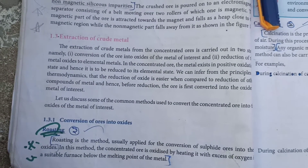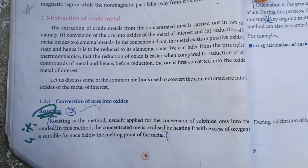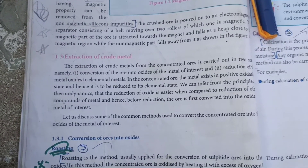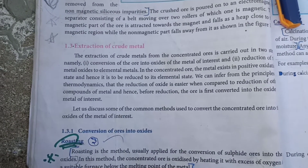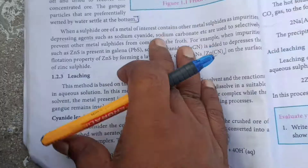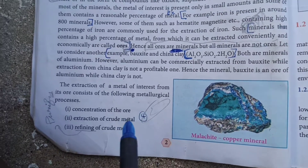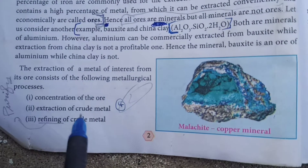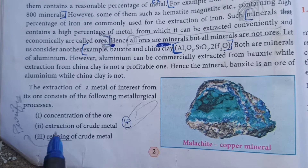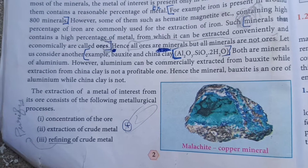Dear students, good morning to all. In our chemistry class, we are going to talk about page number 6 — extraction of crude metal. In the previous class, we talked about the metallurgical process. There are three main steps: first, concentration of the ore; second, extraction of crude metal; third, refining of crude metal.